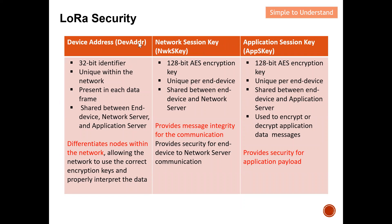These are the three keys the end device needs before it can join the LoRaWAN network. First, the Device Address, which uniquely identifies the end device. Second, the Network Session Key, which is a 128-bit AES encryption key. Third, the Application Session Key, also a 128-bit AES encryption key. To conclude, an end device joins a LoRaWAN network via one of two methods: Over the Air Activation or Activation By Personalization. I also explained the difference between a private key and a public key.